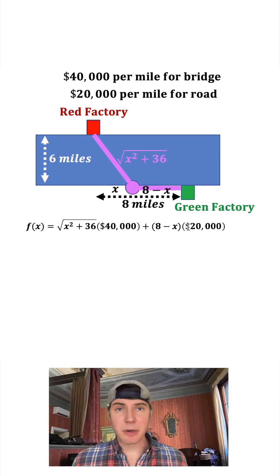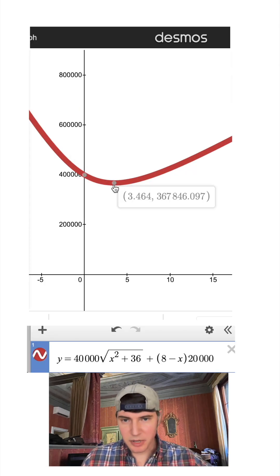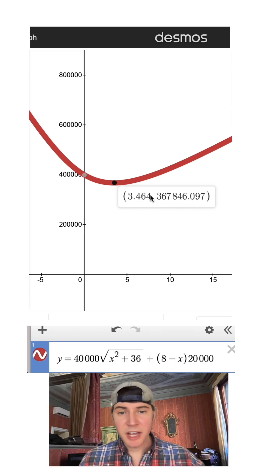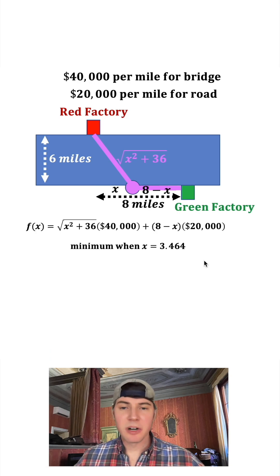First we could graph it and find where the minimum occurs. Here's the graph of the function, and if we click on it, it shows the minimum is 3.464. When x equals that, it's going to cost about $367,846.10. Any movement to the right or left is going to cost us more.